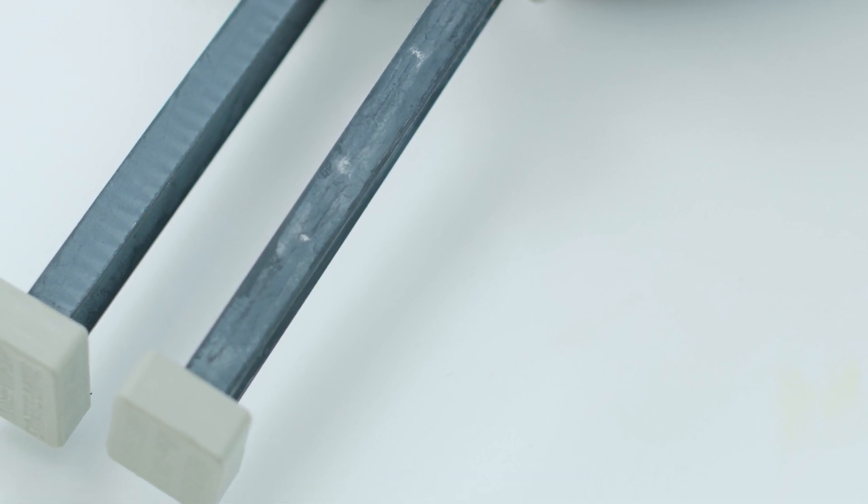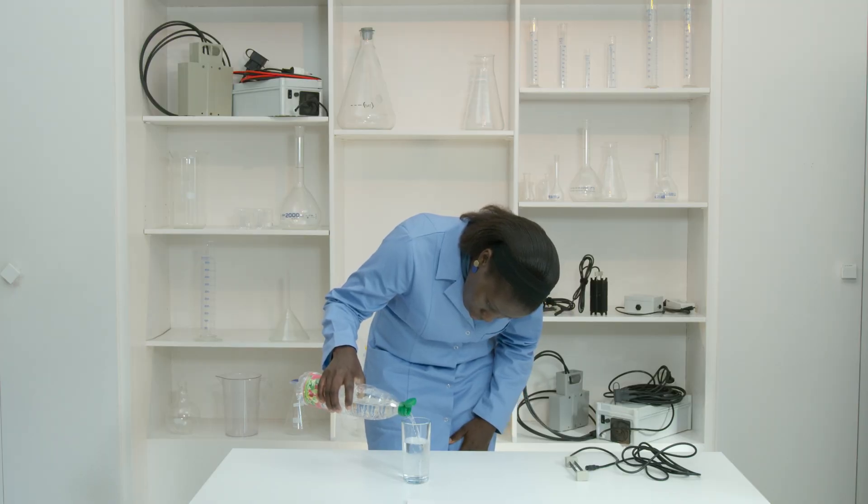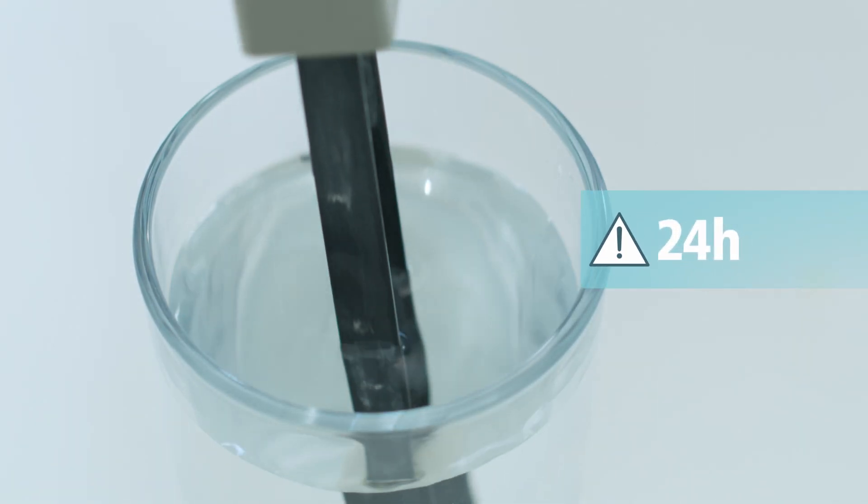If deposits appear on the electrode, soak the device in a vinegar solution, 50% water and 50% vinegar, for 24 hours.